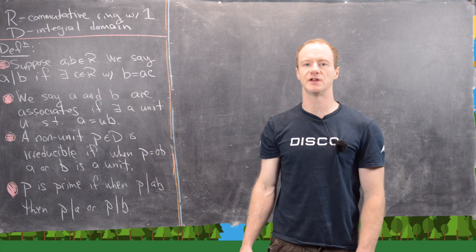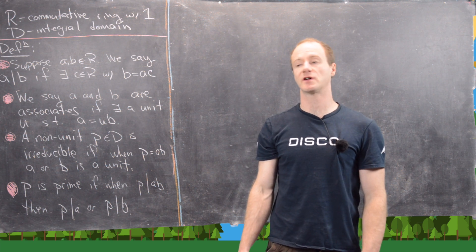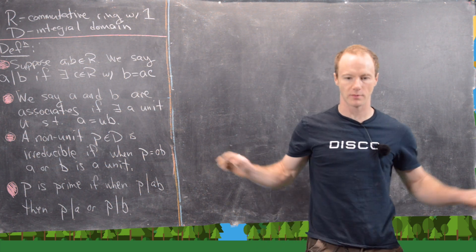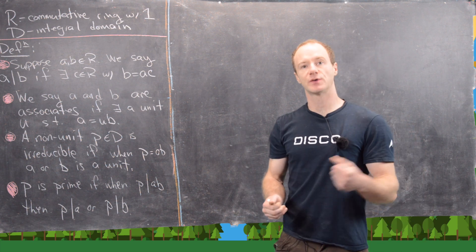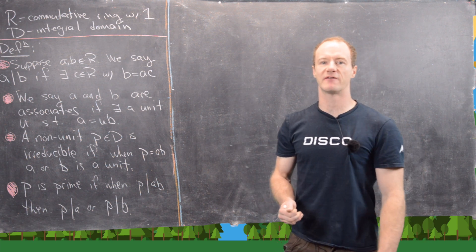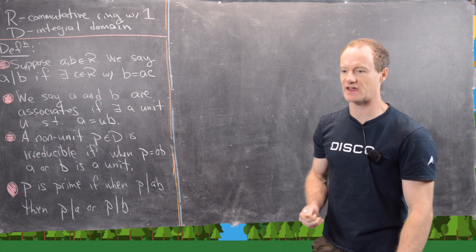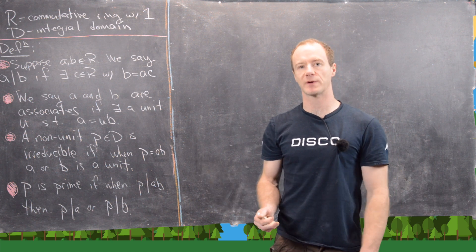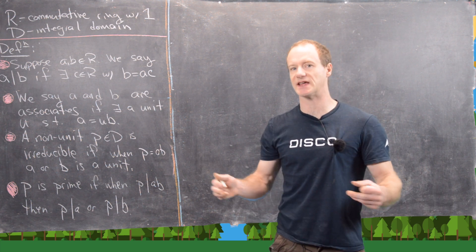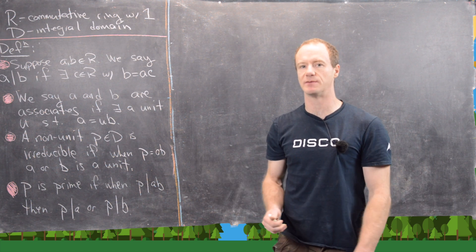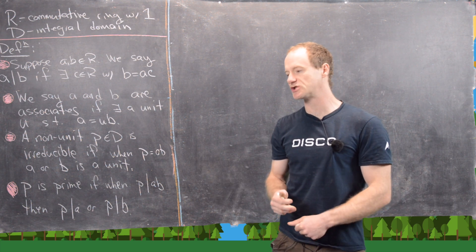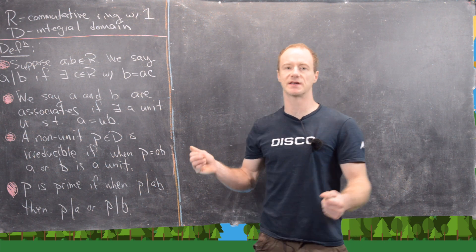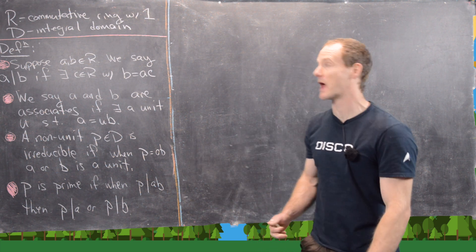This is the start of a series of videos where we look at factorization in arbitrary integral domains. We already know something about factorization in the integers — for instance, the fundamental theorem of arithmetic, which says that any integer can be factored into a product of prime numbers in some sort of unique way.